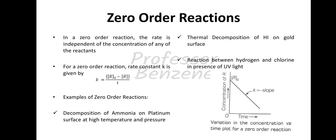Examples of zero order reactions: decomposition of ammonia on the platinum surface at high temperature and pressure, thermal decomposition of HI on a cold surface, and the reaction between hydrogen and chlorine in presence of UV light. These reactions are all zero order reactions. If we plot this graph, because the concentration decreases constantly with time, the graph is a straight line sloping downwards, where k is the negative of the slope. The graph is concentration versus time — the variation in the concentration versus time plot for a zero order reaction.